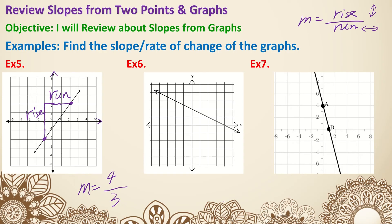Number 6 — no points are given, so you need to identify two points yourself. Starting from the left point, go vertical first: to reach the point on the right, we go down by 1, so the rise is negative 1. Then we go to the right by 2, which is our run — positive 2. So the slope is negative 1 over 2, which is negative one-half.